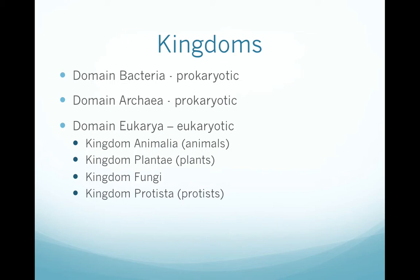Kingdom Plantae includes the plants — organisms that are able to make their own food through photosynthesis and are typically stationary for most of their life. Kingdom Fungi contains all the yeasts, molds, and other fungal organisms that reproduce through spores and cannot make their own food. These organisms often digest dead plants and animals as their food source.